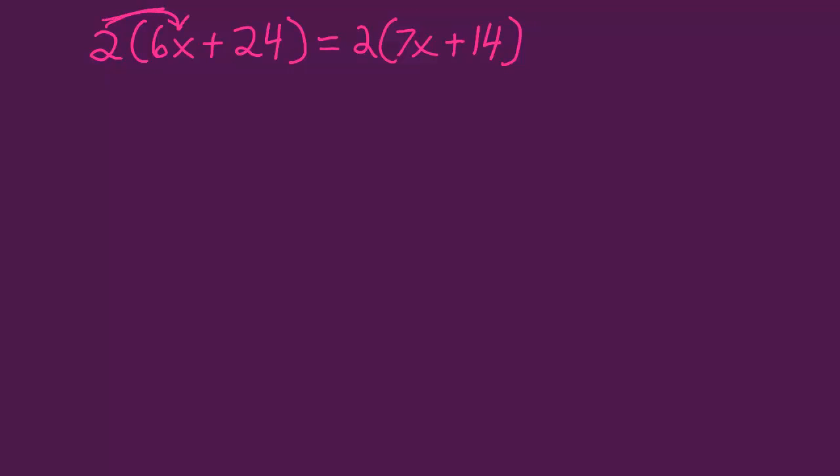We'll take the 2 and multiply it by the 6x and the 24. That will give us 12x, which is a variable term, and 48, which is a constant term.